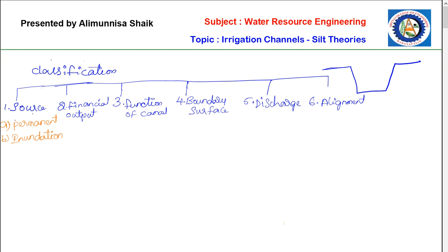An inundation canal comes into supply when there is a high stage in the river. Unlike permanent canals, it cannot provide water throughout the year — there is no guarantee that water will flow continuously. So with permanent canals the water supply is year-round, but with inundation canals we cannot expect water to flow throughout the year.